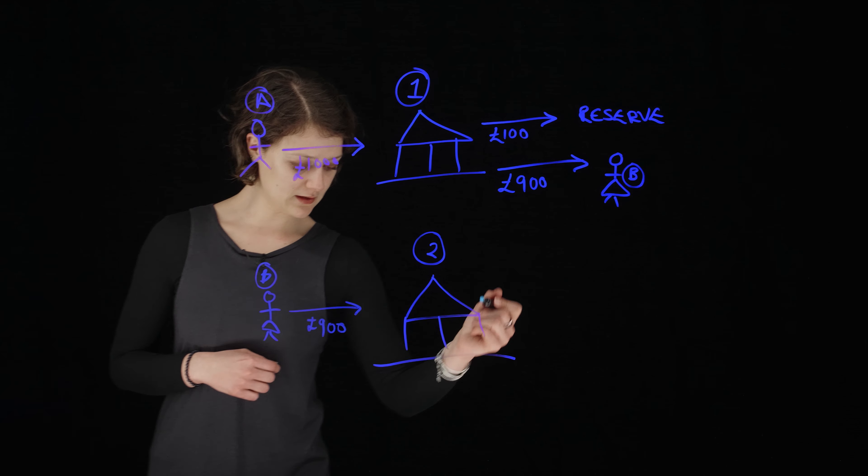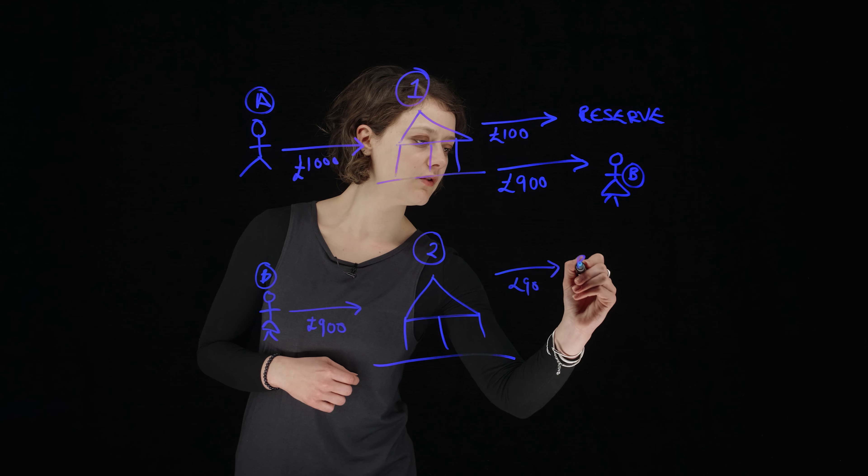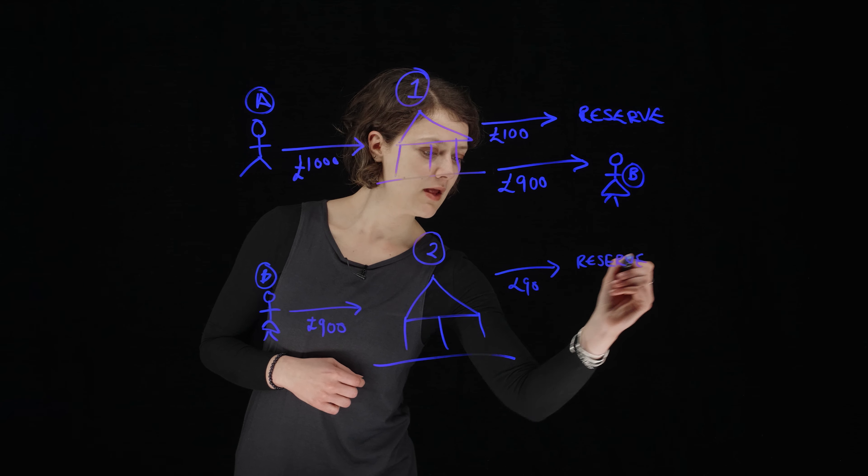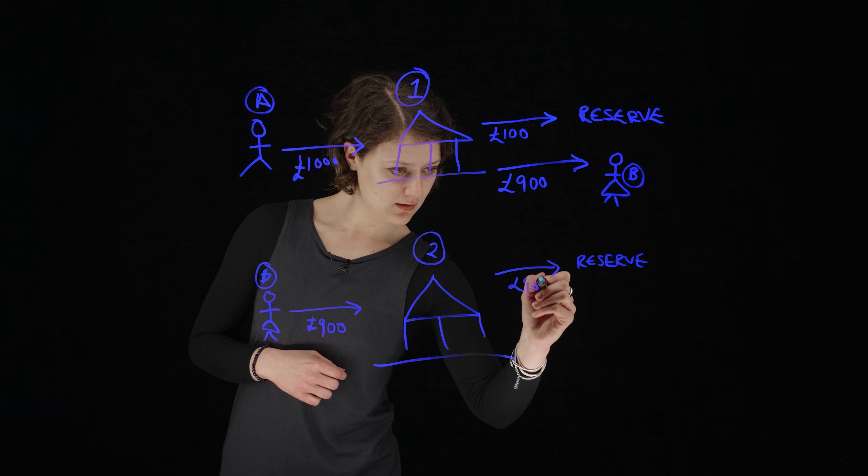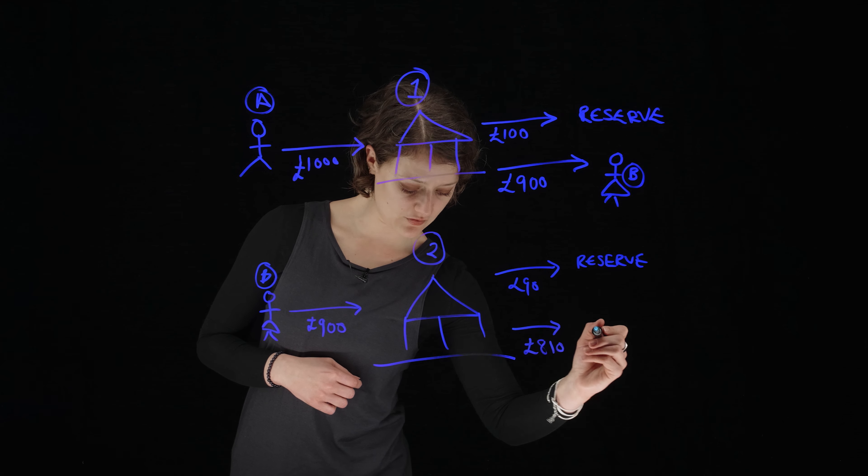And then bank number two is going to do the same thing. It's going to put some money to its reserve. If I can spell reserve, that is. And then it's probably going to lend some more money to a different person. So this is how money is moving through the system.